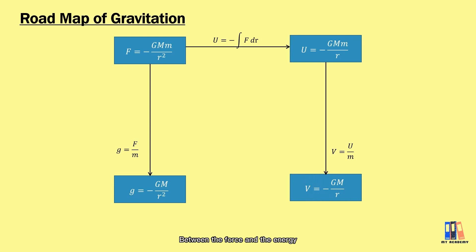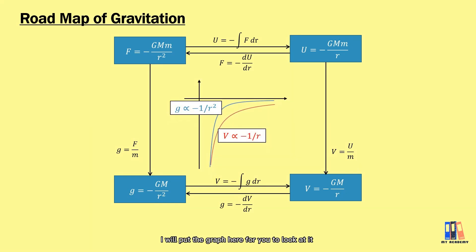Something to add to this roadmap of Chapter 6: between the force and the energy, we can see the force can also be obtained by differentiation of potential energy with respect to distance. Next is the relationship between g and V—there is also integration and differentiation between them. For the graphical illustration on the variation of g and V with distance from the surface of the Earth, I will put the graph here for you to look at. It should not be too difficult to understand.